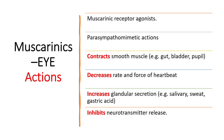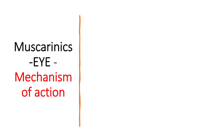To recapitulate, muscarinic receptor agonists have parasympathomimetic actions: they contract smooth muscles, decrease heart rate and force of contraction, increase glandular secretion, and inhibit neurotransmitter release. Next, let us move on to the mechanism of action of muscarinic receptors on the eye.